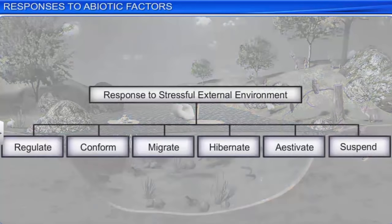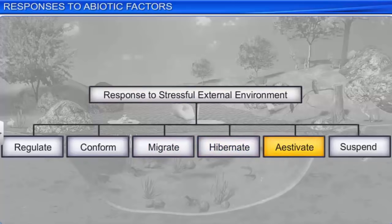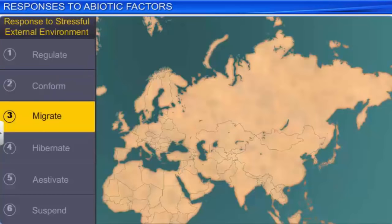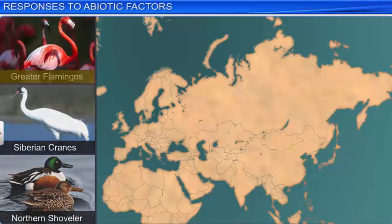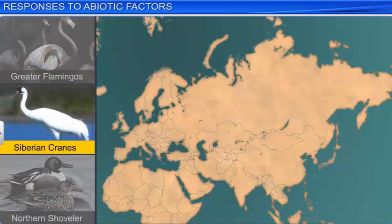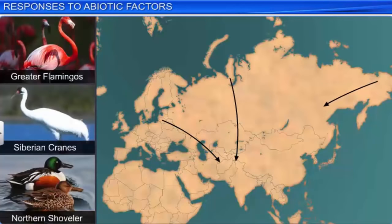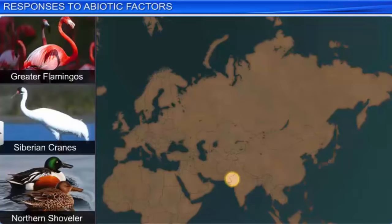Sometimes, stressful external conditions may be localized or have a short duration. In such situations, organisms may migrate, hibernate, estivate, or suspend themselves to survive. Particularly during winter, you may have read about or witnessed the arrival of migratory birds such as the greater flamingo, Siberian cranes, and northern shoveler from Siberia and other cold northern regions, to the famous Keoladeo National Park in Bharatpur, Rajasthan. Similarly, in Europe too, people staying high up in the Alps come down to the valleys during winter.